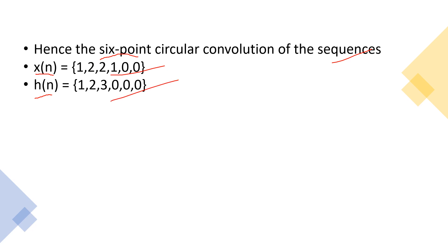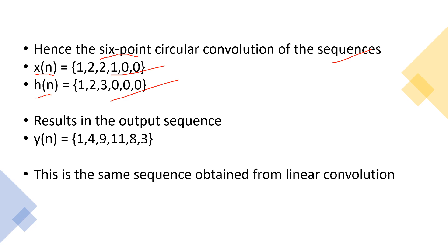The output sequence we got here is y of n equal to 1, 4, 9, 11, 8, 3. This is the same sequence obtained from a linear convolution as we have matched the lengths of both circular convolution and linear convolution.